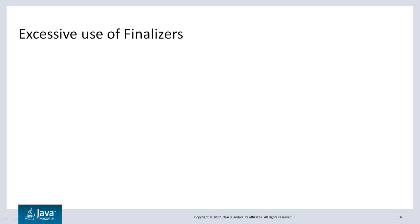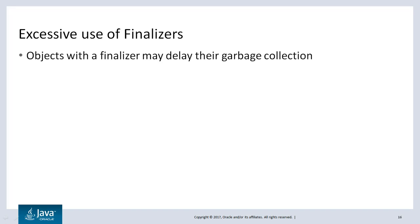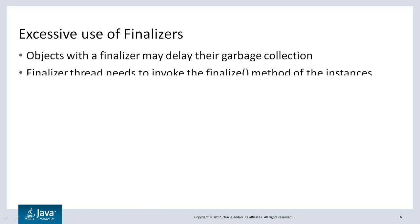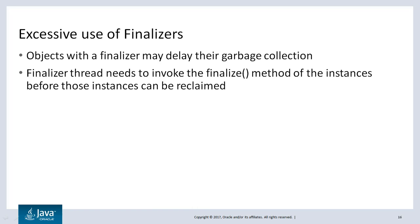Now let's talk about finalizers and how they may impact memory consumption in Java applications. Objects that have a finalize method implemented in their classes are said to have finalizers. Objects with finalizers may delay their own garbage collection. When the objects become non-reachable and are eligible for collection, the finalizer thread needs to invoke their finalize method before those instances can be reclaimed.